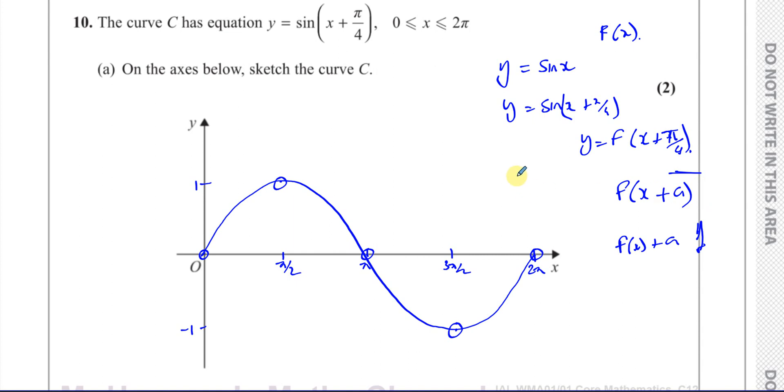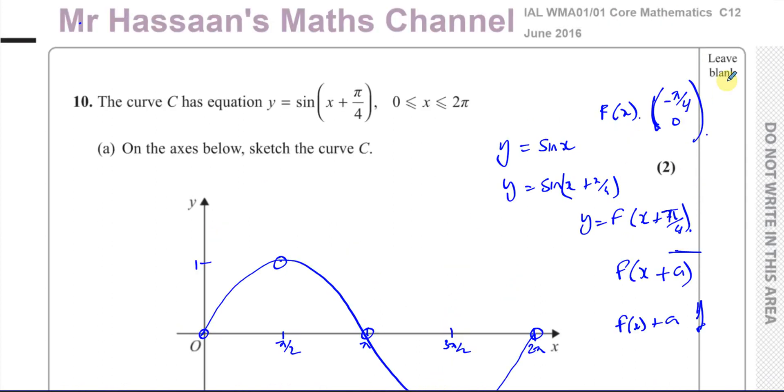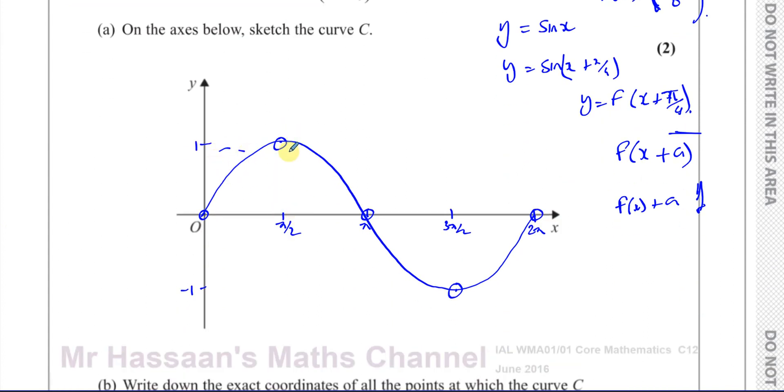The horizontal translations act like opposite. So if it says X plus pi over 4, it means it's going to be a translation of minus pi over 4, 0. The opposite of this sign. That means everything moves pi over 4 to the left. So that means basically that this curve is going to move. All the points are going to basically be translated pi over 4 units to the left.